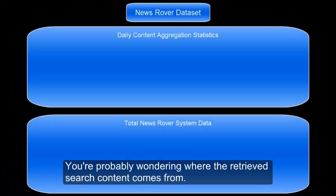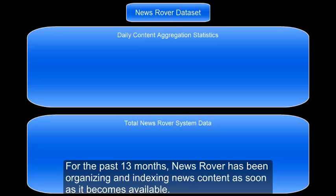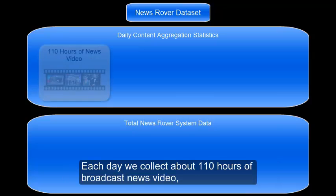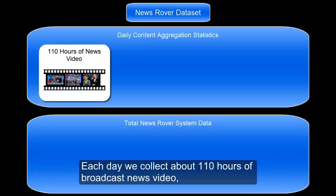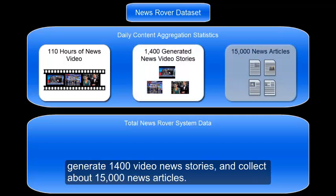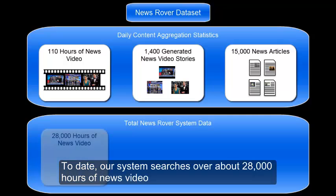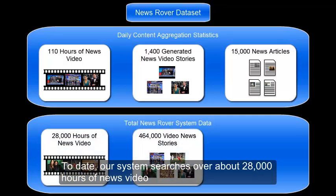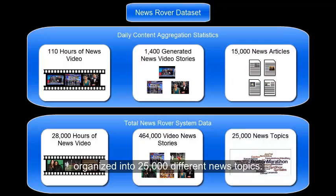You're probably wondering where the retrieved search content comes from. For the past 13 months, News Rover has been organizing and indexing news content as soon as it becomes available. Each day, we collect about 110 hours of broadcast news video, generate 1,400 video news stories, and collect about 15,000 news articles. To date, our system searches over about 28,000 hours of news video, organized into 25,000 different news topics.